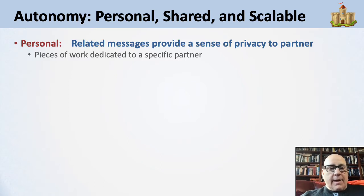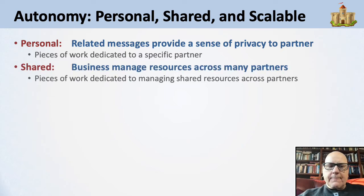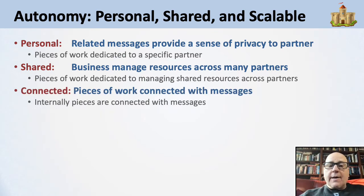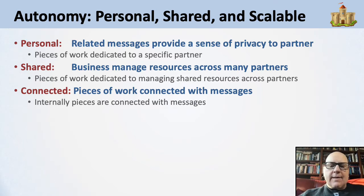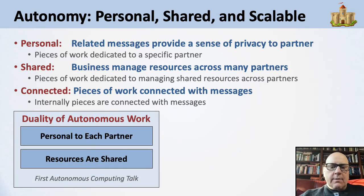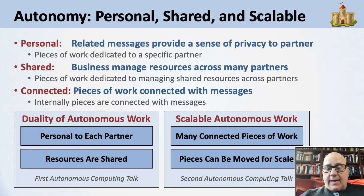Autonomy is personal, shared, and scalable. Personal because related messages provide a sense of privacy to the partner — pieces of work are dedicated to a specific partner. It's shared though, because the business has resources being allocated and shared across many partners, with pieces of work dedicated to managing those resources. It's connected because pieces of work are connected with messages, and messaging can connect pieces so that work can be comprised of many small pieces. There is a duality of autonomous work: it's both personal to each partner but the resources are shared — that's the first autonomous computing talk. It's also scalable because scalable autonomous work has many connected pieces that can be moved around for scale — that's the second autonomous computing talk.